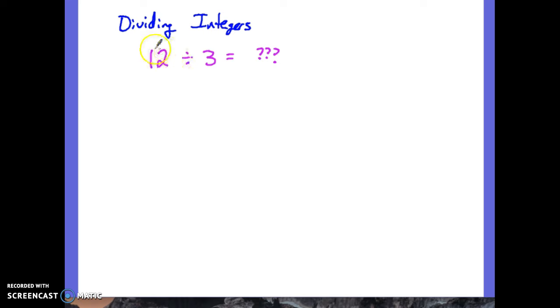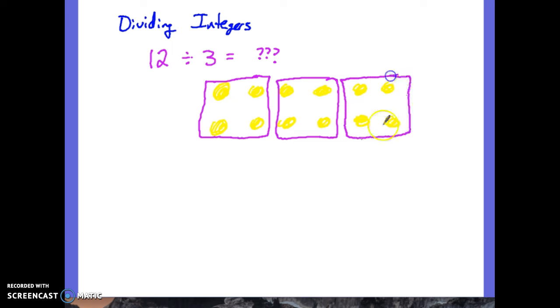We're going to use the idea that this is how many counters I have. We have 12 positives: one, two, three, four, five, six, seven, eight, nine, ten, eleven, and twelve counters. I'm going to divide those as nearly as possible into three equal groups. So here's a group here, here, and here, and it appears as though there are four in each group. That makes sense. We know that 12 divided by 3 is 4.